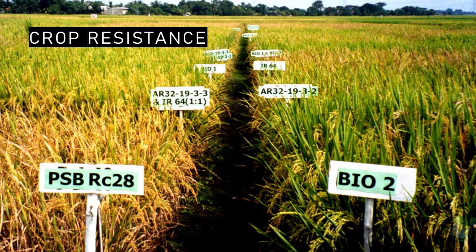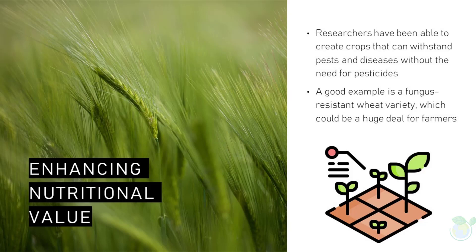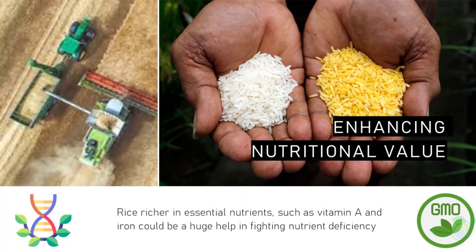Another area of progress is in improving the nutritional value of crops. Scientists have been able to develop crops that are richer in essential nutrients such as vitamin A and iron. One example is a rice variety that is rich in beta-carotene, which can be converted to vitamin A in the body. This could be a huge help in fighting vitamin A deficiency in developing countries.